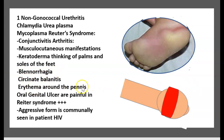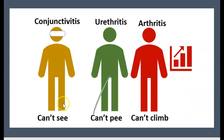Additional features include circinate balanitis — erythema around the penis — and oral or genital ulcers. Importantly, oral/genital ulcers are painful in Reiter syndrome but not painful in syphilis. An aggressive form is commonly seen in HIV patients. The mnemonic for Reiter syndrome is: can't see, can't pee, can't climb a tree — referring to conjunctivitis, urethritis, and arthritis.